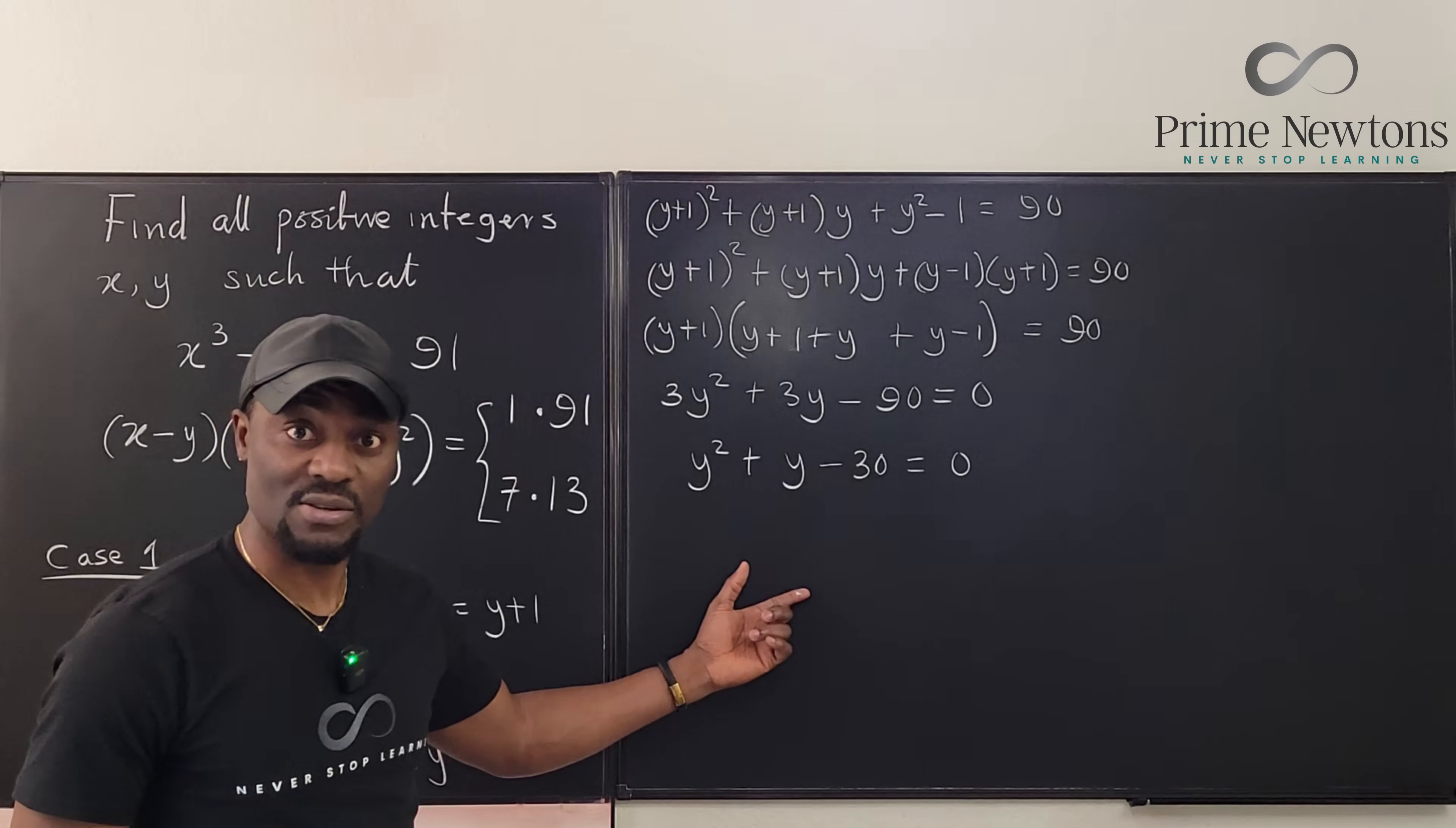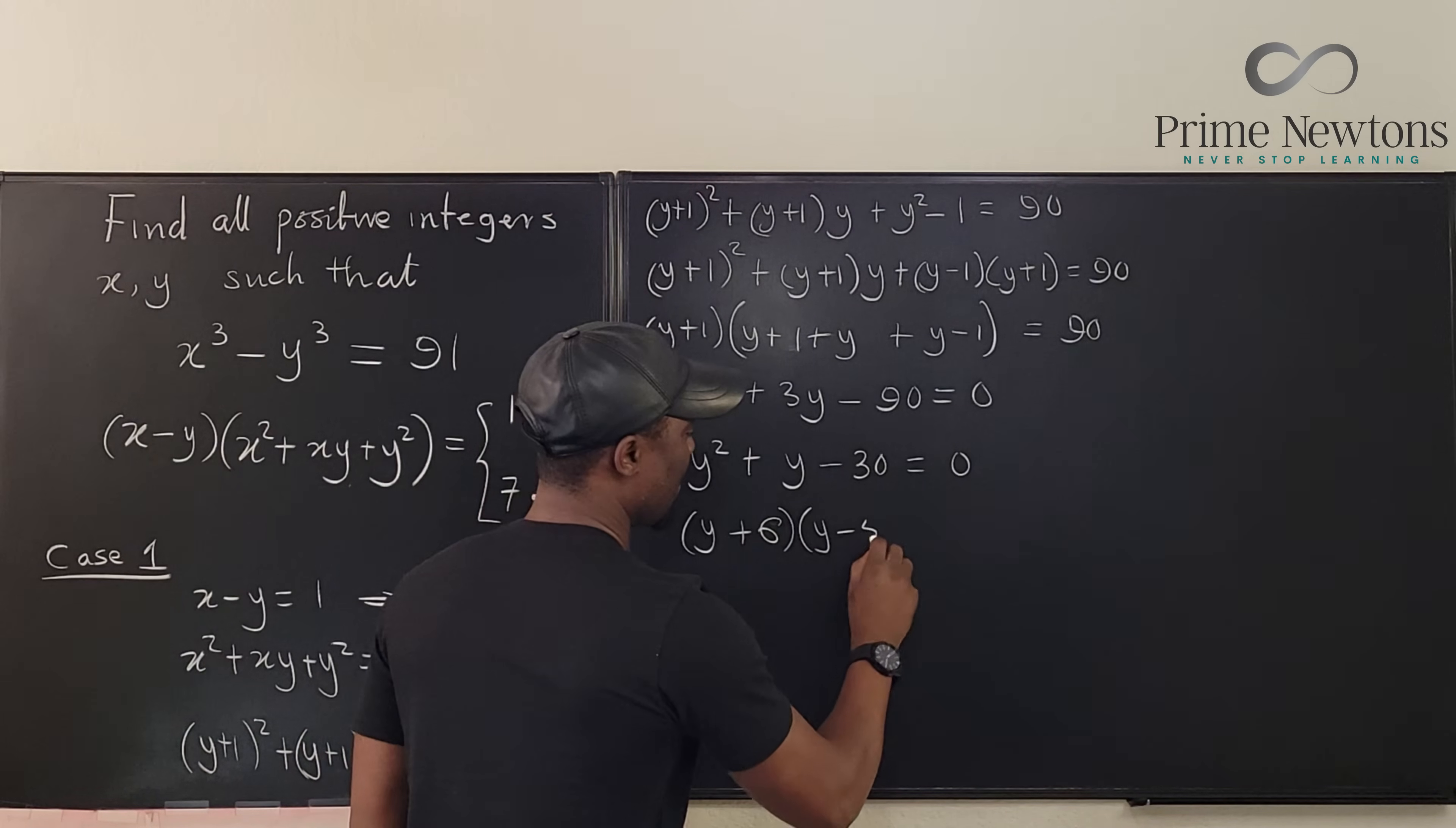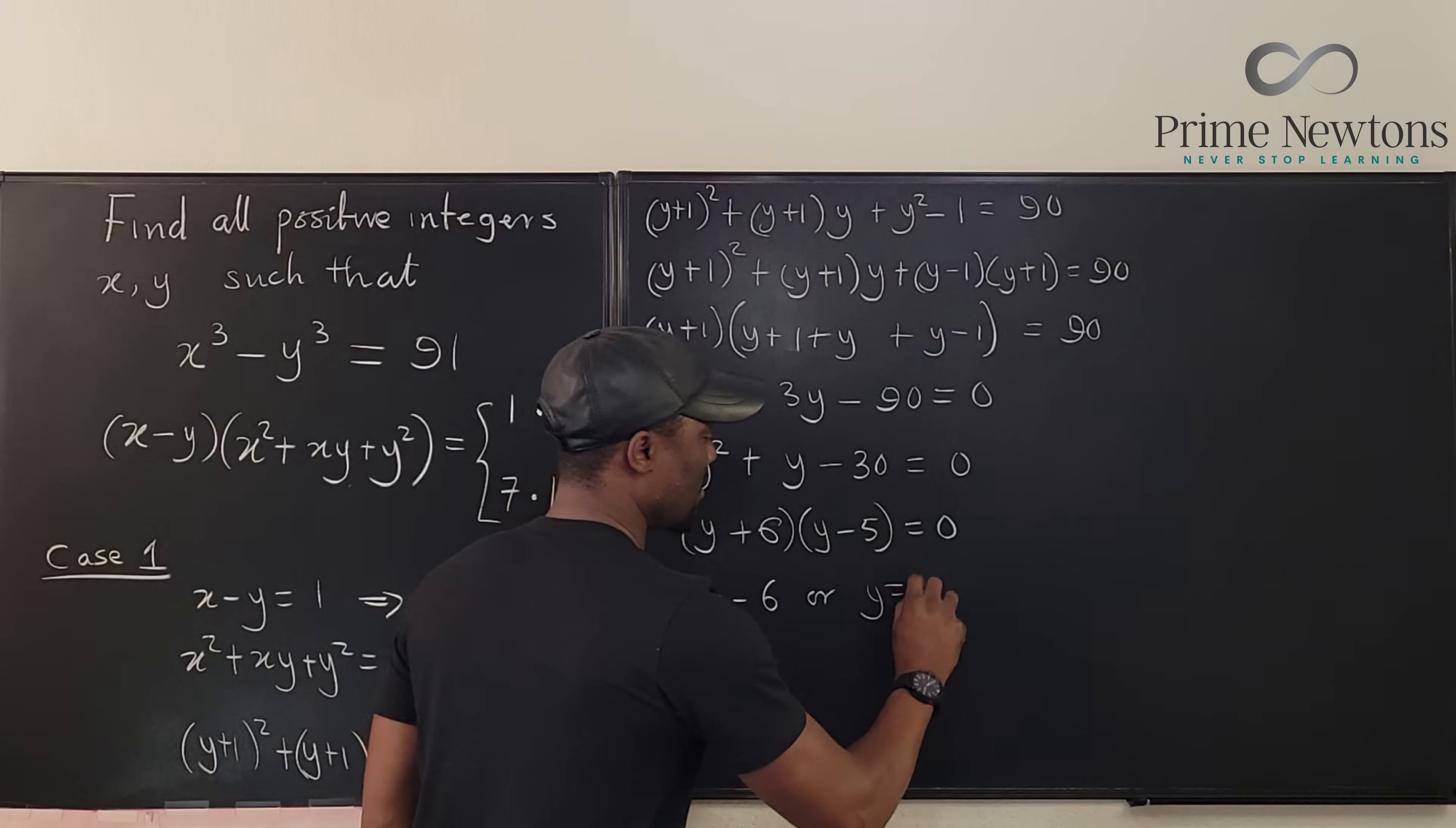This can be factored. Algebra 2. This is y plus 6 and y minus 5 equals 0. By the zero product property, we can solve and say that y equals negative 6 or y equals 5.